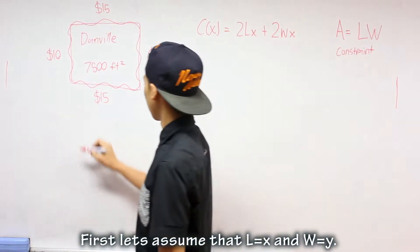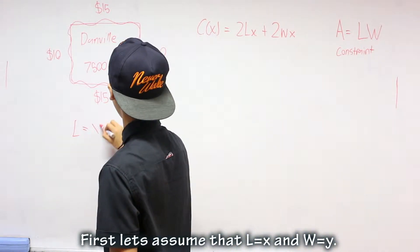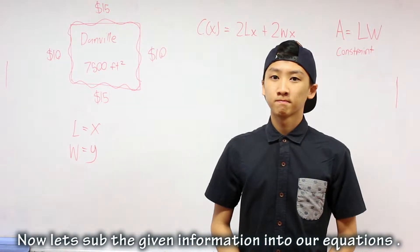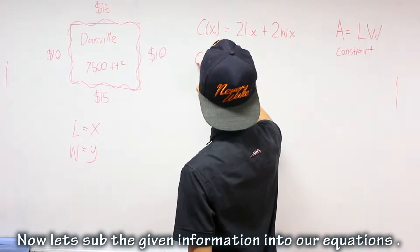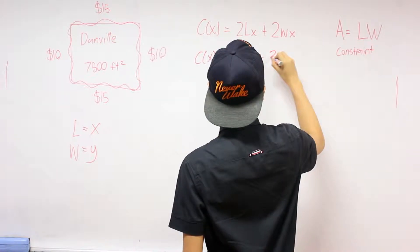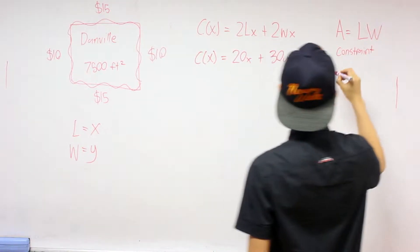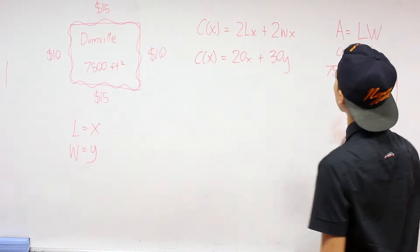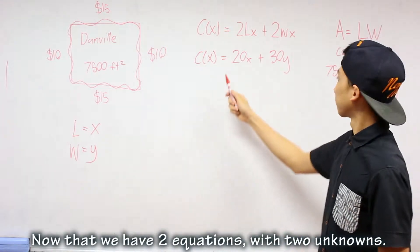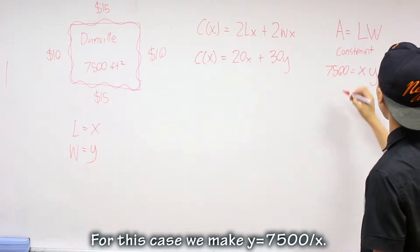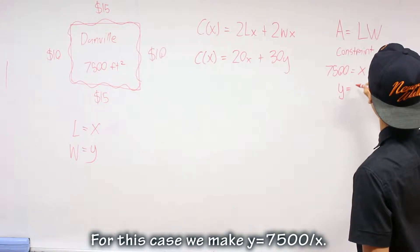First, let's assume that L equals X and W equals Y. Now let's sub the given information into our equations. Now that we have two equations with two unknowns, we can make one of the equations equal to an unknown. For this case, we made Y equals to 7,500 over X.